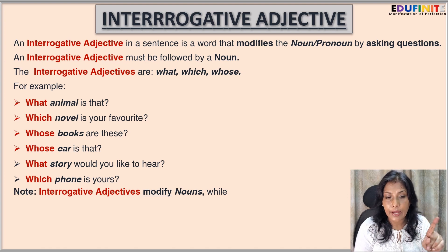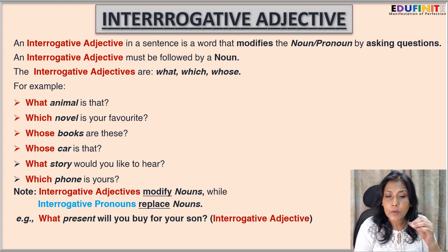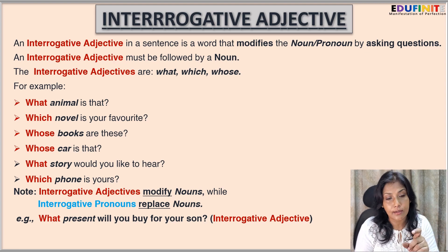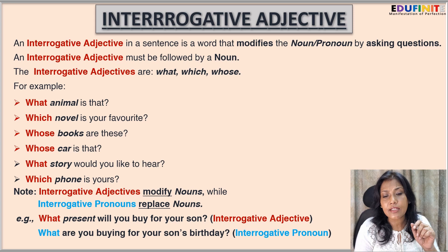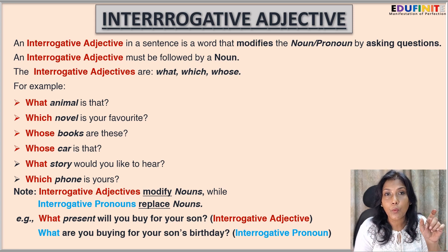Note: interrogative adjectives modify nouns while interrogative pronouns replace nouns. For example: 'What present will you buy for your son?' — here 'what' is followed by the noun 'present,' so 'what' is the interrogative adjective. But in the sentence 'What are you buying for your son's birthday?' — after 'what' there is no noun. So we are not uttering the noun 'present'; we are using 'what' to represent it. Therefore, here 'what' is the interrogative pronoun.